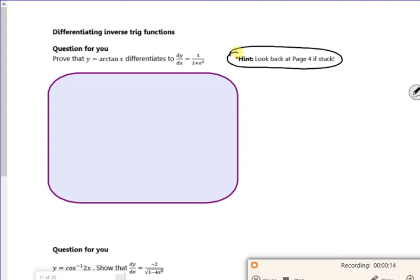So if we follow the same format, I've got tan to the minus 1 of x, rearrange it, tan y is equal to x. So if I write it as x equals tan y, I can differentiate it. So x becomes dx, I've got y on the other side. I know that if I differentiate tan, it becomes secant squared y.